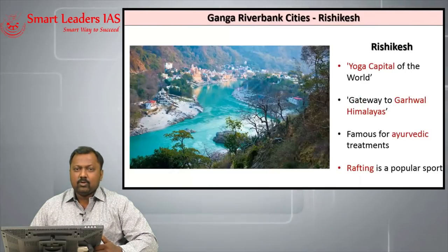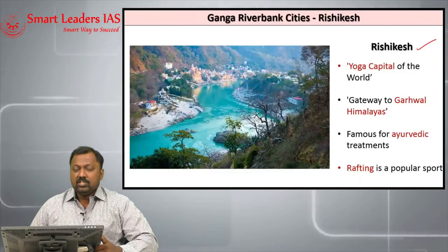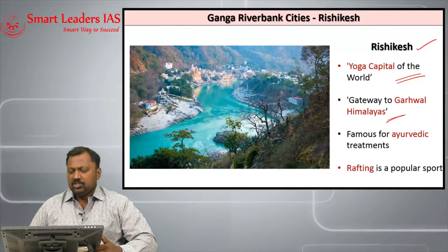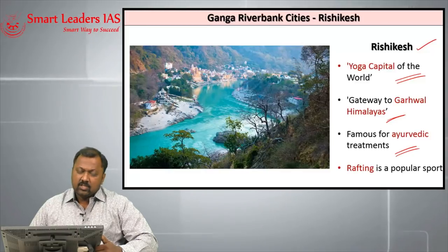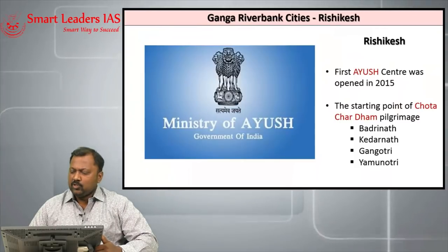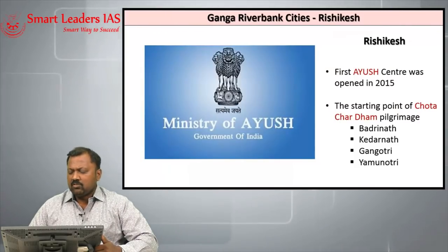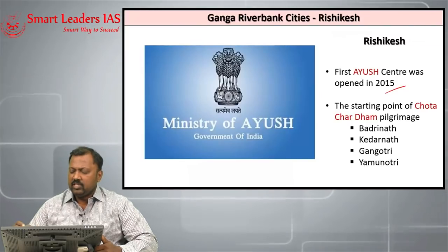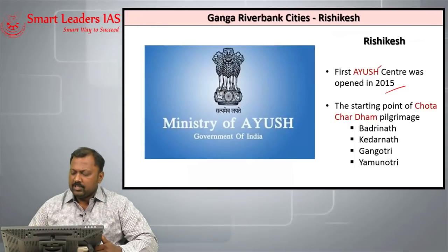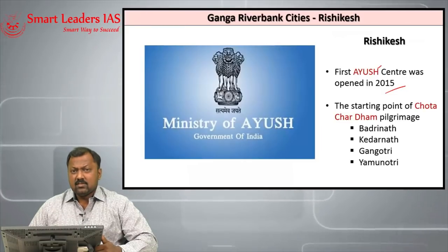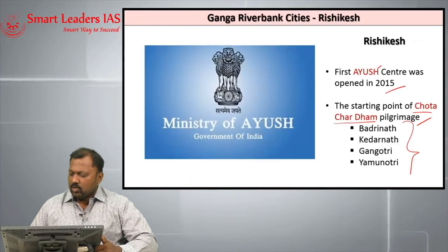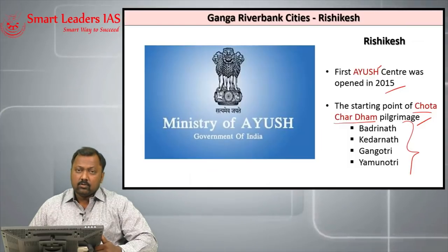Rishikesh is the yoga capital of the world and also the gateway to the Gharwal Himalayas. It is famous for Ayurvedic treatments and rafting, a very popular sport here. The first Ayush centre was opened by the government in 2015 in Rishikesh. Ayush stands for Ayurveda, Yoga, Unani, Siddha and Homeopathy. Rishikesh is also the starting point of the Char Dham pilgrimage, which covers Badrinath, Kedarnath, Gangotri and Yamunotri.